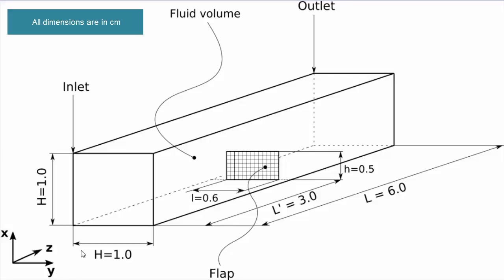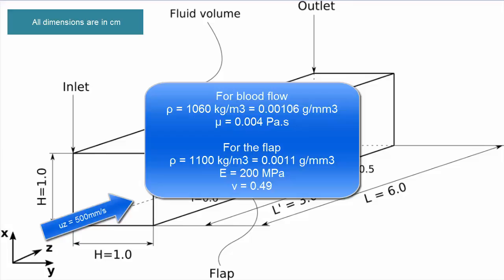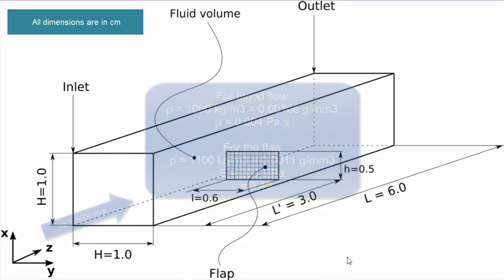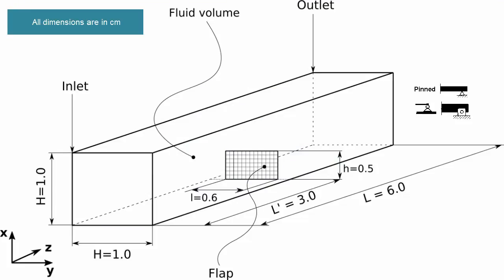Welcome to this FSI tutorial for the simulation in LS-Dyna of a square channel. The test case is a simple channel shape with a flap made up of shell elements. The simulation will examine how the flap deforms under certain boundary conditions. The inlet velocity is 500 millimeters per second, and the leaflet will be constrained when in contact with the square channel using a pinned constraint — free to rotate in X, Y, and Z but constrained in terms of movement.